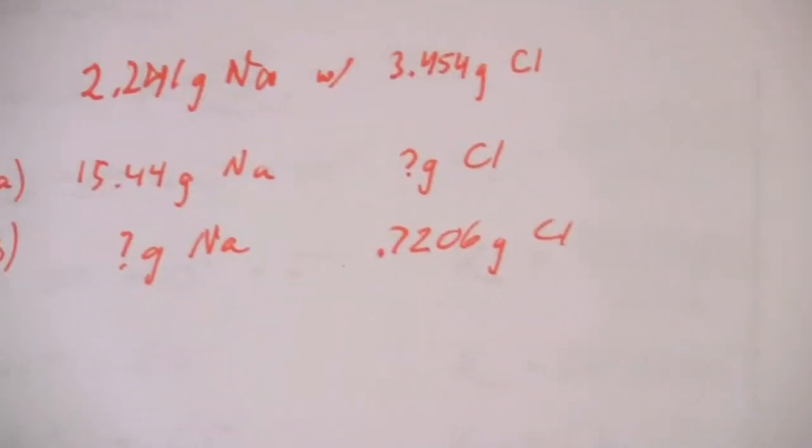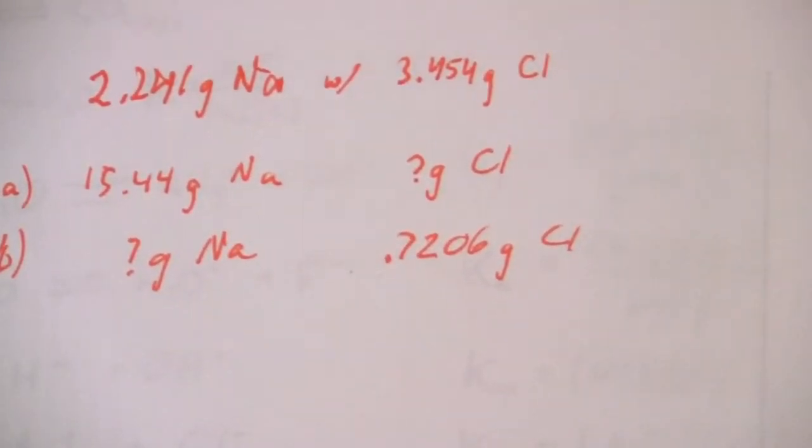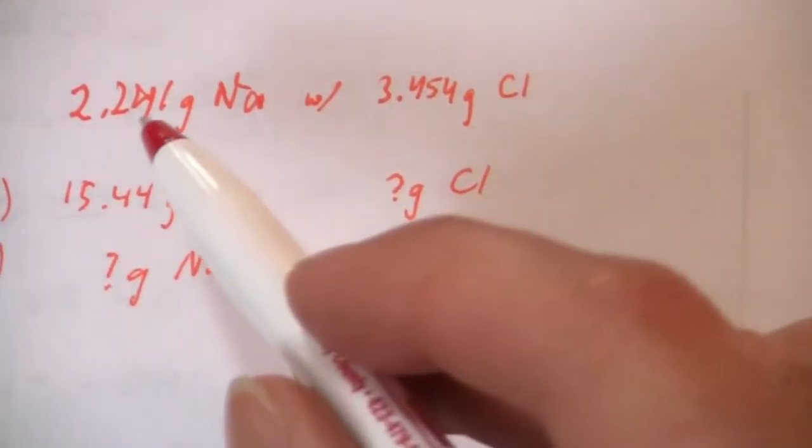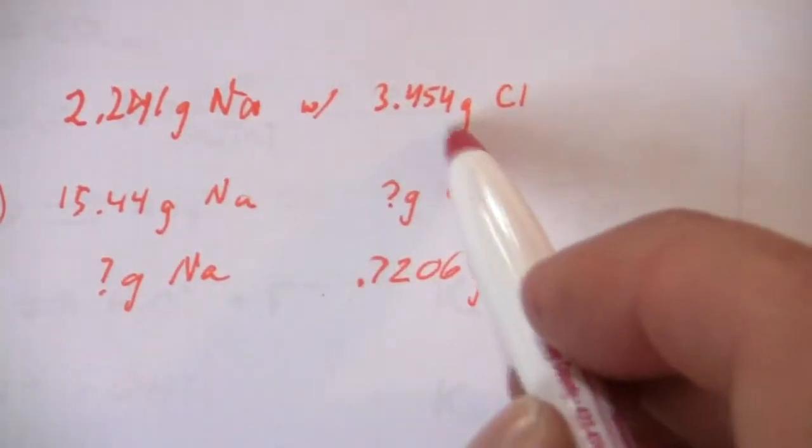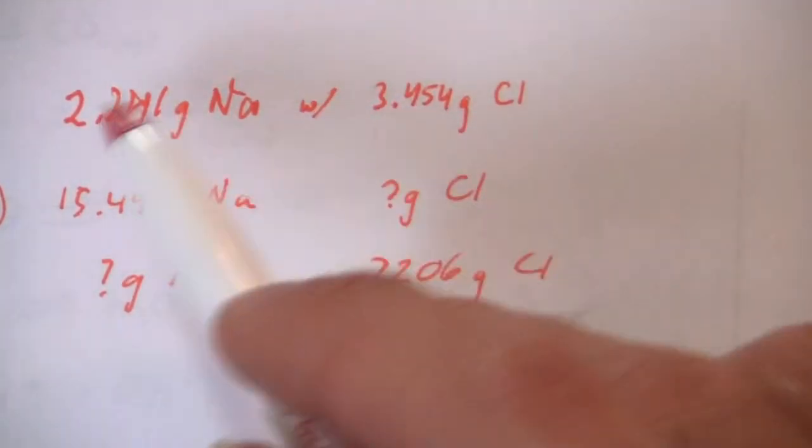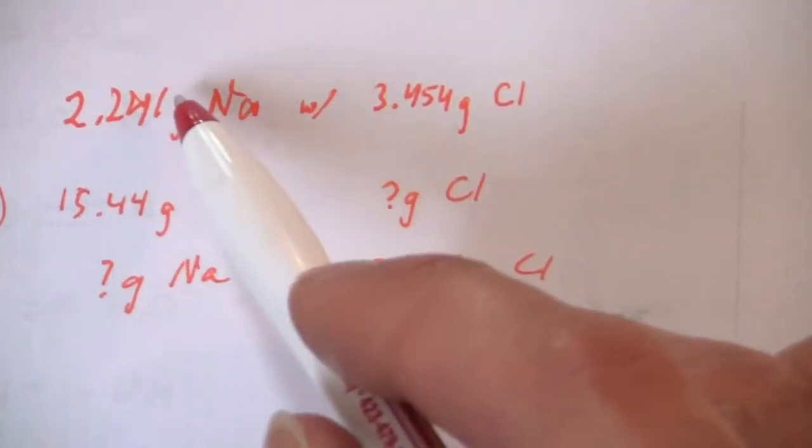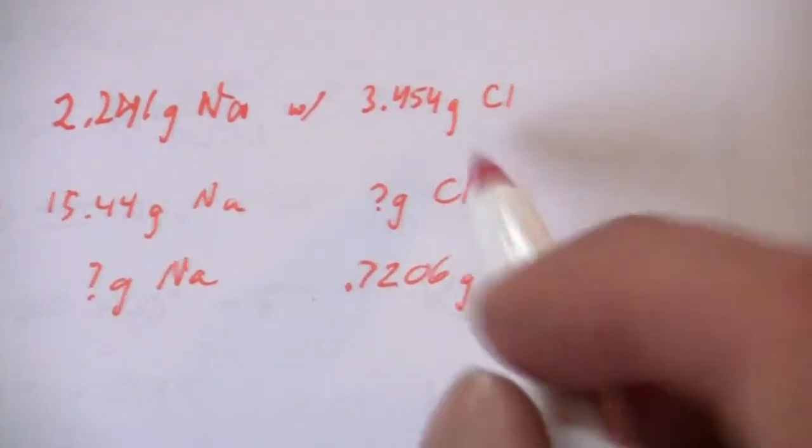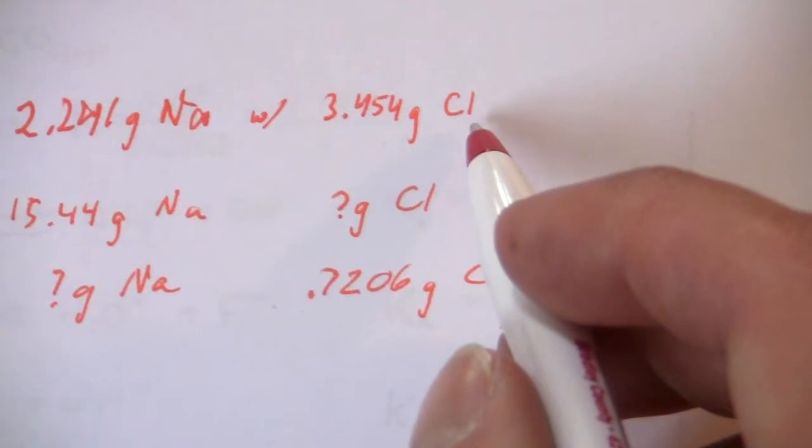So here is the information that we are given, just kind of boiled down on paper. Here's our initial ratio or proportion. We know that 2.241 grams of sodium react with 3.454 grams of chlorine.